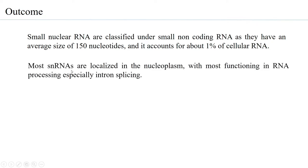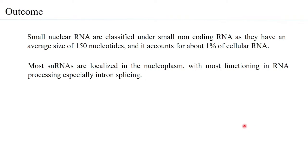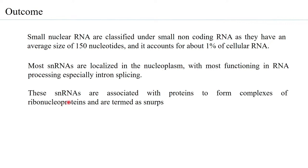Most small nuclear RNAs are localized in the nucleoplasm, with most of them functioning in RNA processing, especially in intron splicing. These small nuclear RNAs are associated with proteins to form complexes of ribonucleoproteins, termed as snRNPs. Many of these ribonucleoproteins also have catalytic activity, and therefore the RNA within the ribonucleoproteins acts as ribozymes.